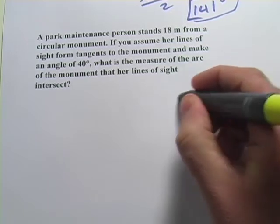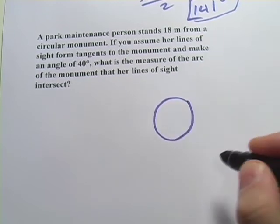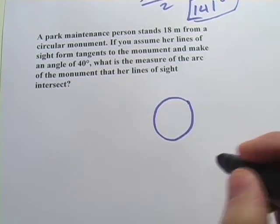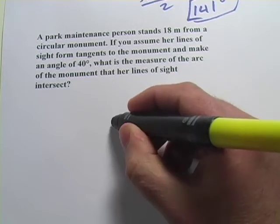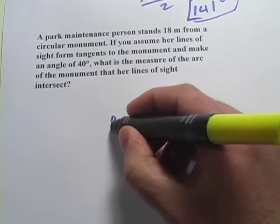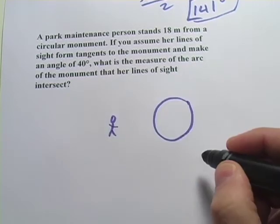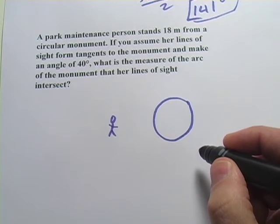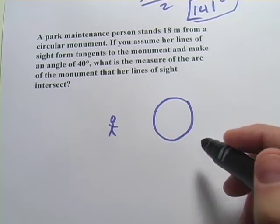A circular monument, I'm going to draw this from a top-down perspective. So there's our circular monument and then we have a park maintenance person and she's standing 18 meters away from that but I'm not sure we're going to need the length so I'm not going to put that in yet. I think the angles are more important here.